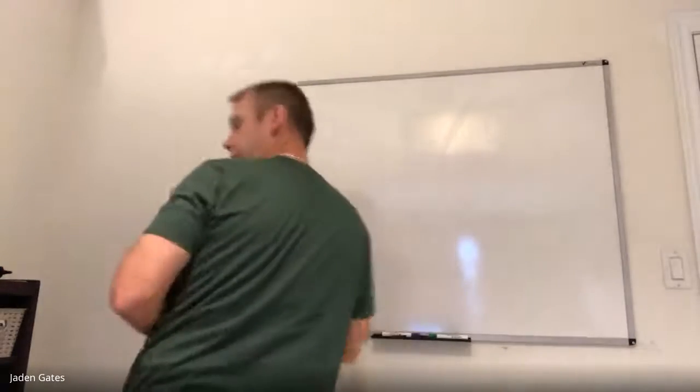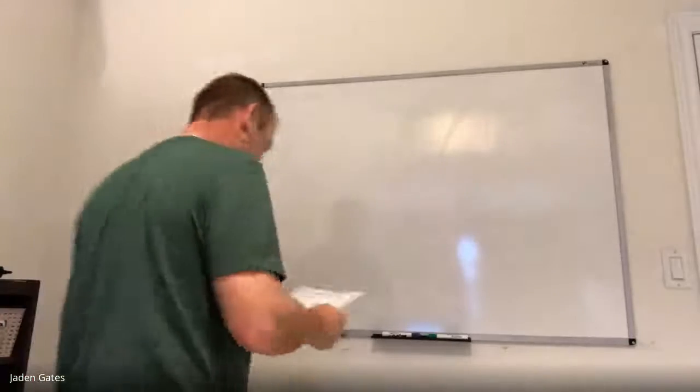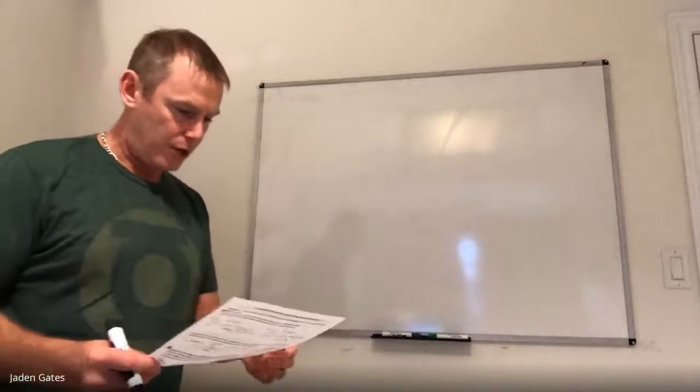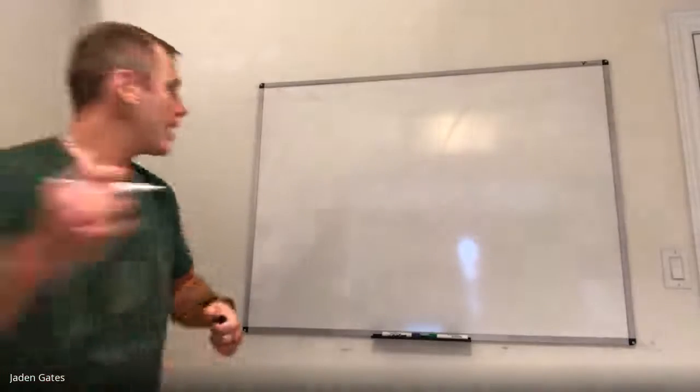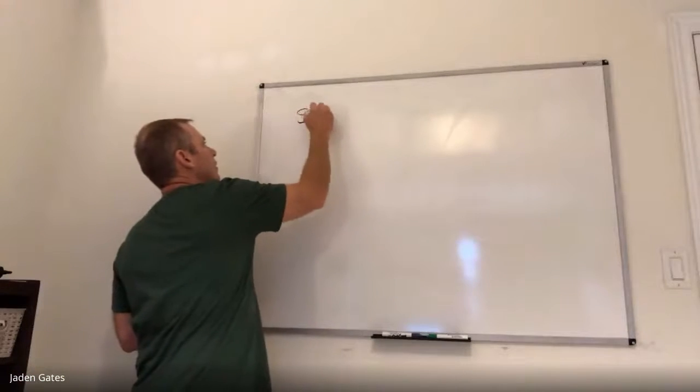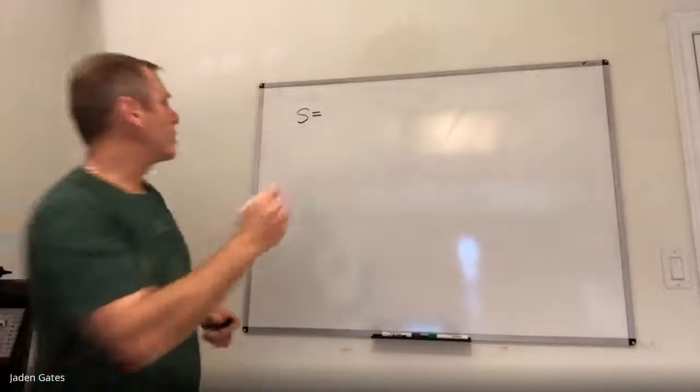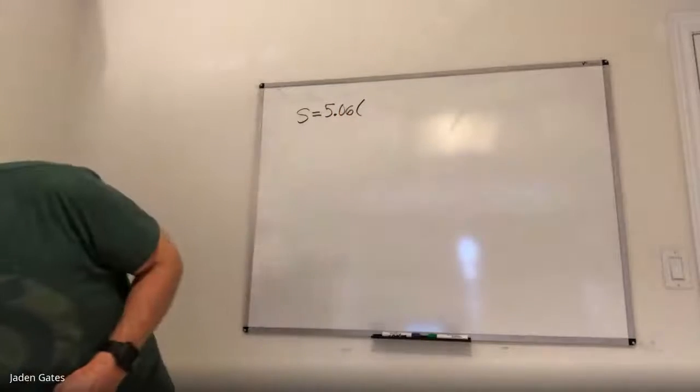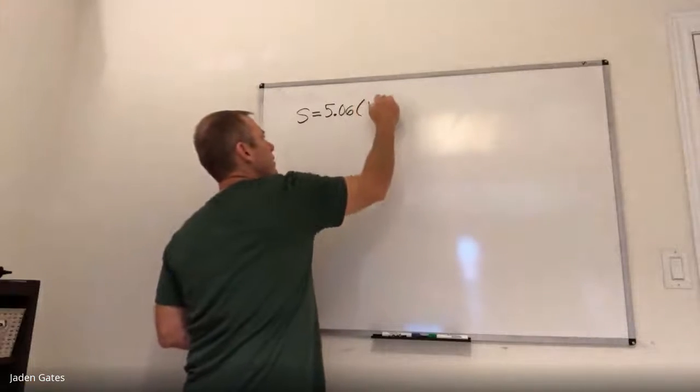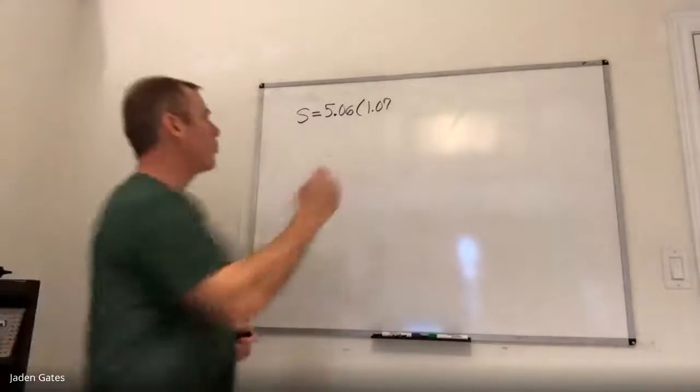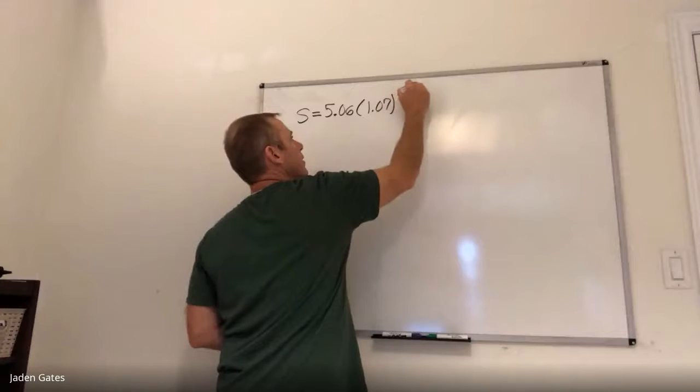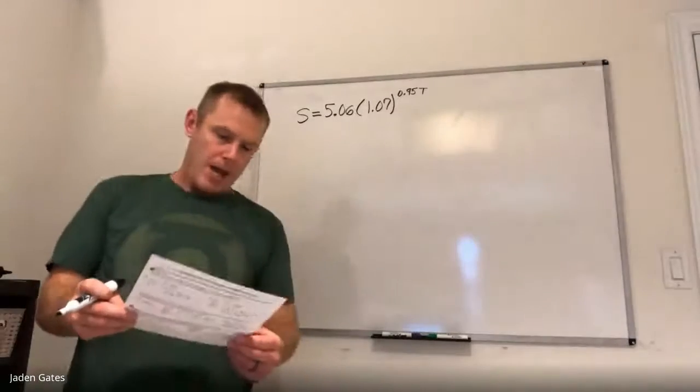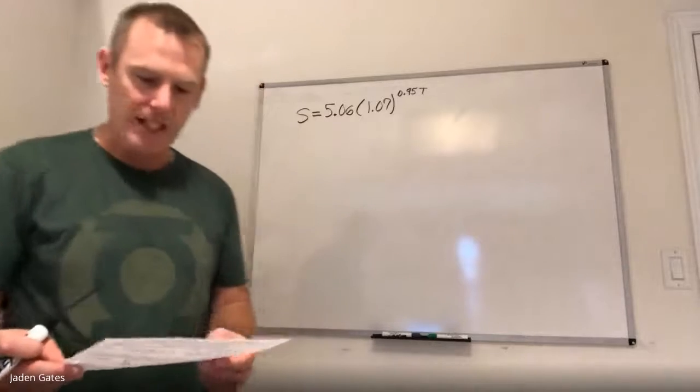All right. So example six says the amount of water vapor. You can tell I'm a science teacher here, all these science examples. The amount of water vapor in the air for a function is given by the equation S is equal to 5.06 times 1.07 to the 0.95 T. There we go. And so T is the temperature and S is the saturation level. All right. And milliliters per cubic meter.